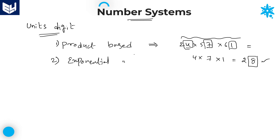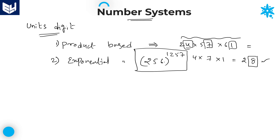Coming to exponential — exponential are very, very important. These are not easy to solve. For example, the question is like 256 to the power of 1257. After doing this calculation, what will be the units place? This type is called exponential based, which is in the form of a power n.